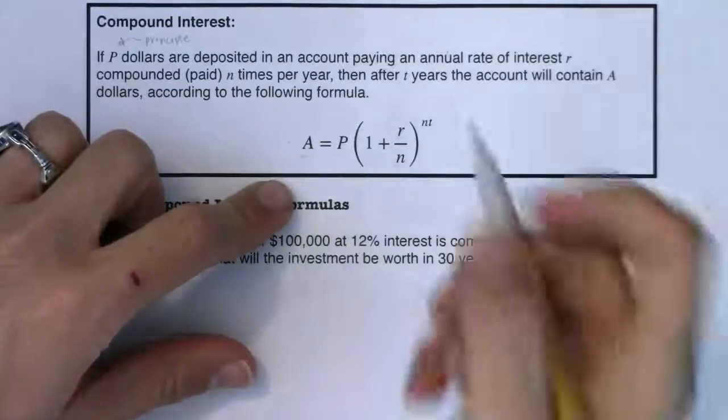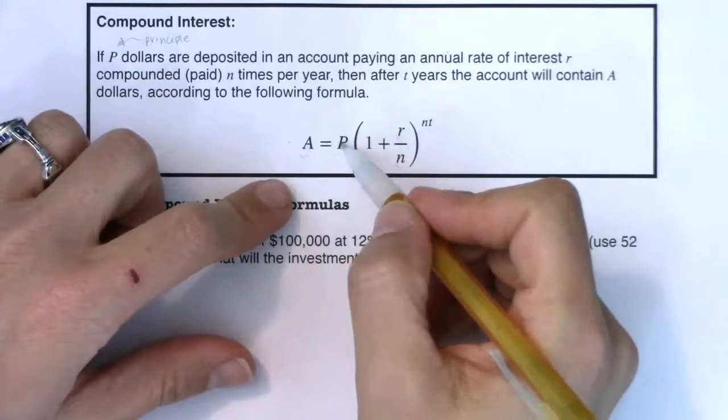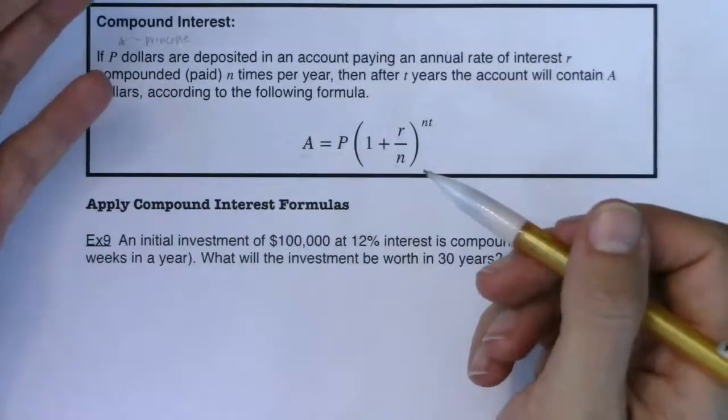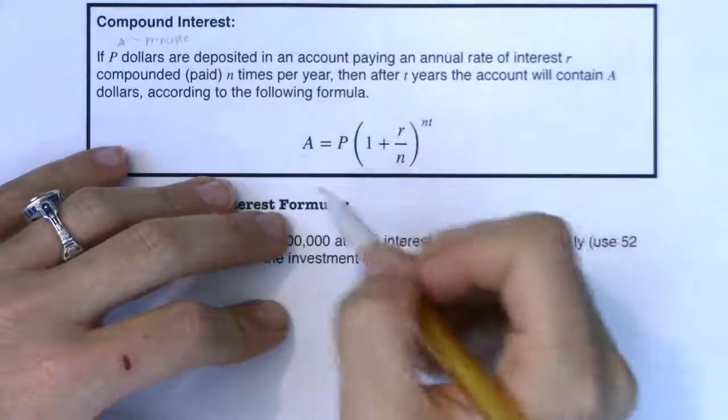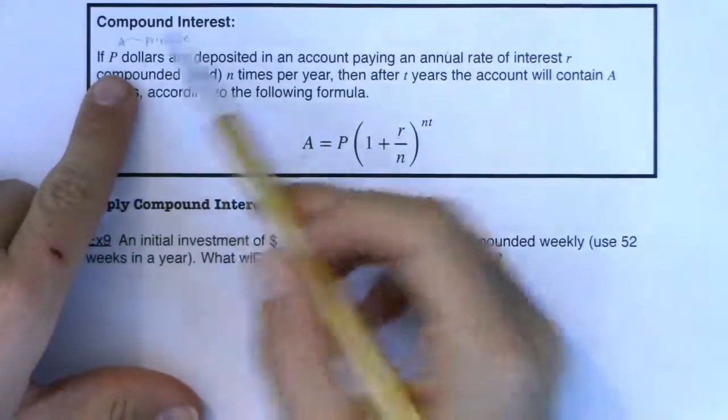And you get that money back when you turn 18. That type of account is governed by this formula. So we're going to make an initial deposit of P dollars.